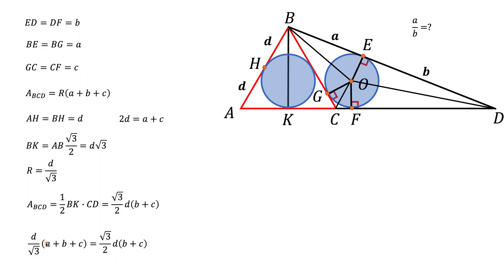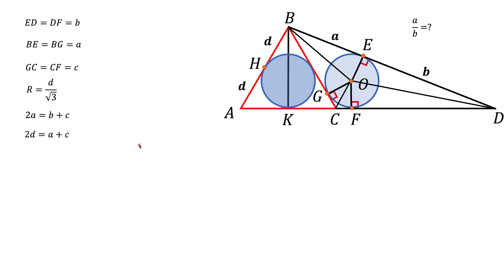Now we can see that D cancels out. After simplifying this equation, we get the relationship between A, B, and C. Next, let's look at the quadrilateral G, O, F, C.